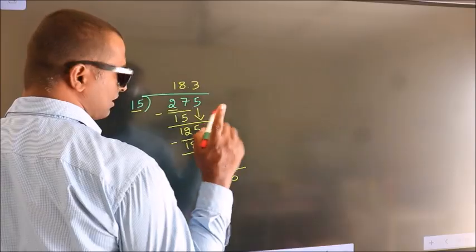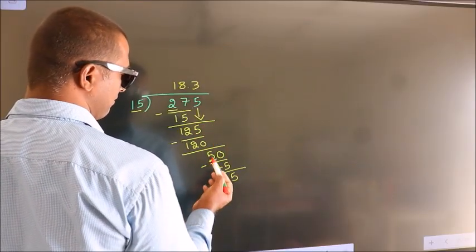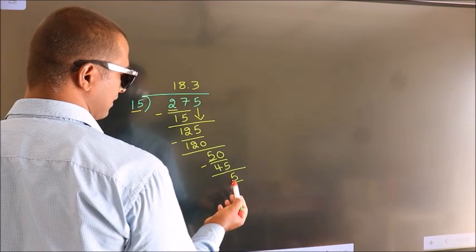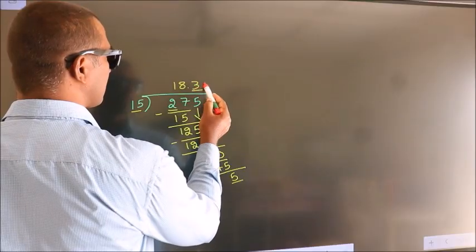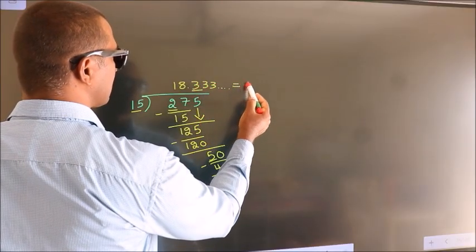Now you observe. Here we had 5, and we got 5 again. That means this number keeps on repeating. So this is our quotient.